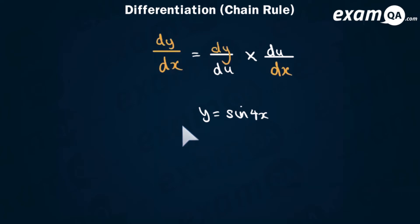Okay so here we've got the chain rule. We've got dy/dx is equal to dy/du times du/dx. And you need to memorize this rule.